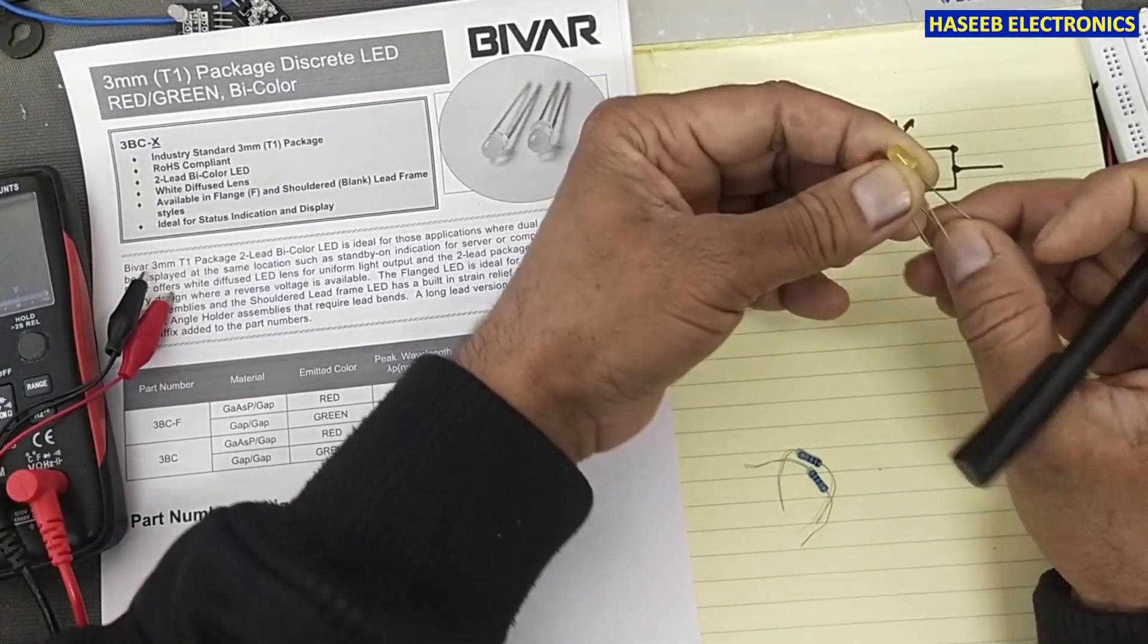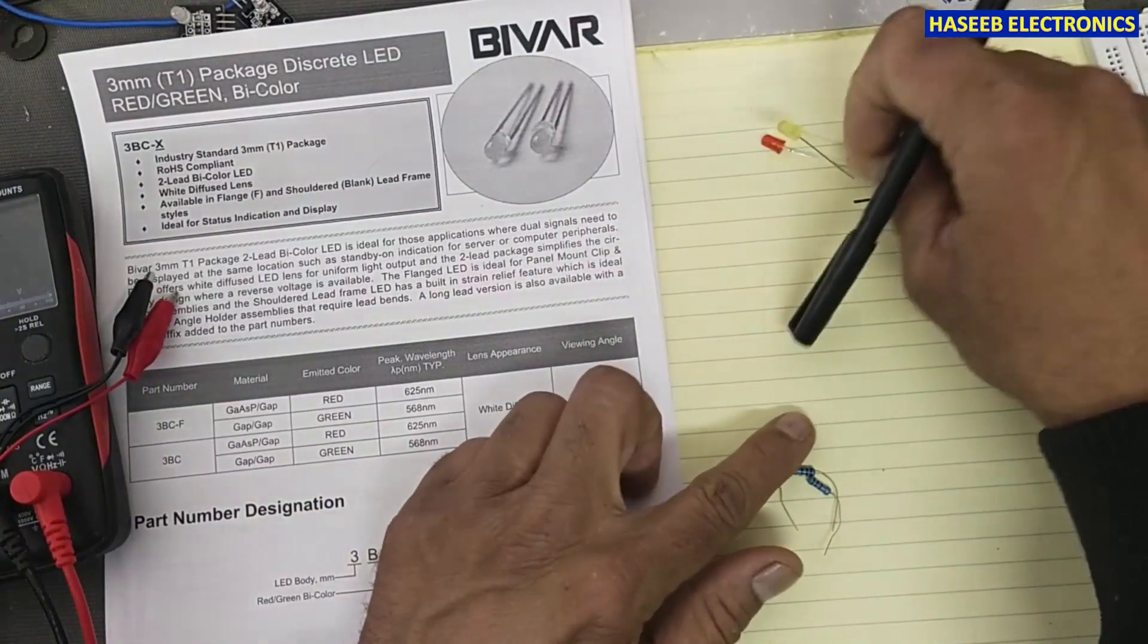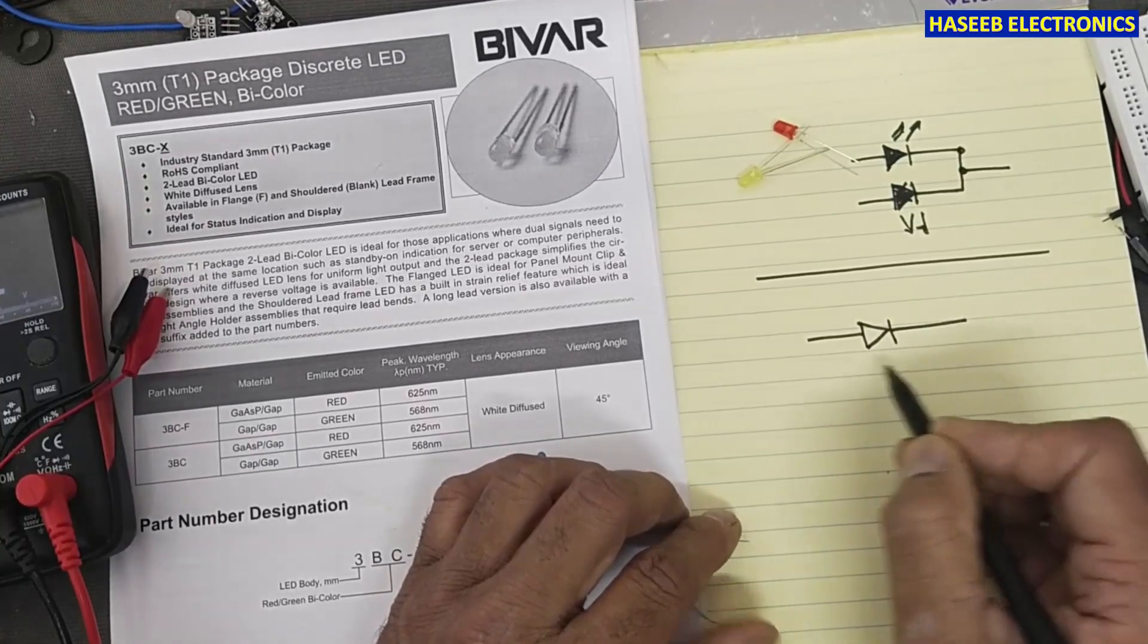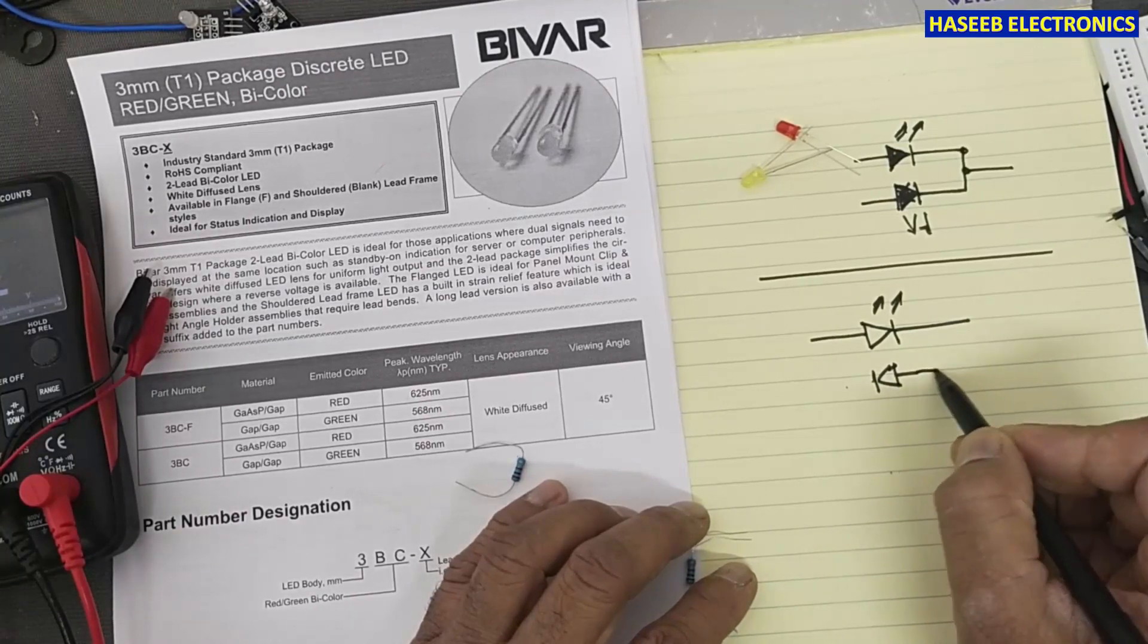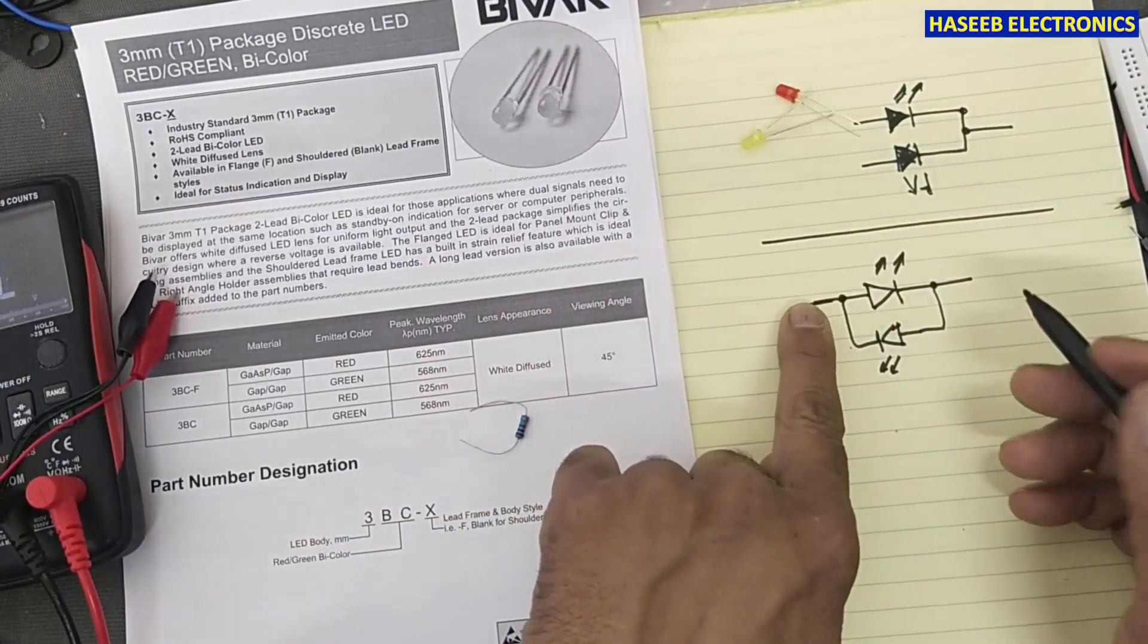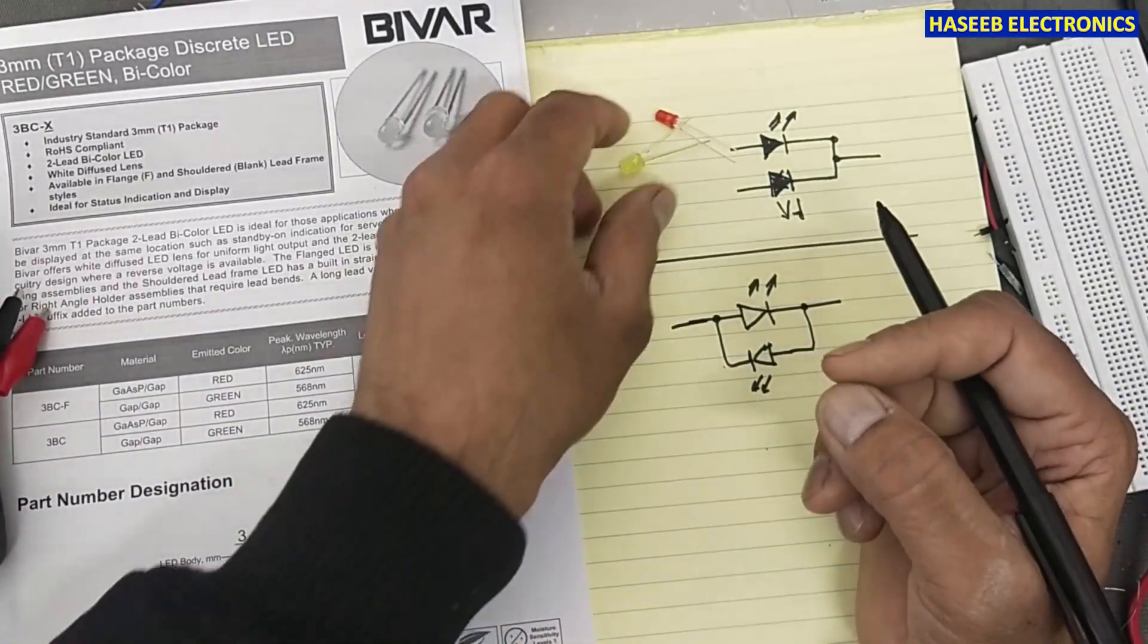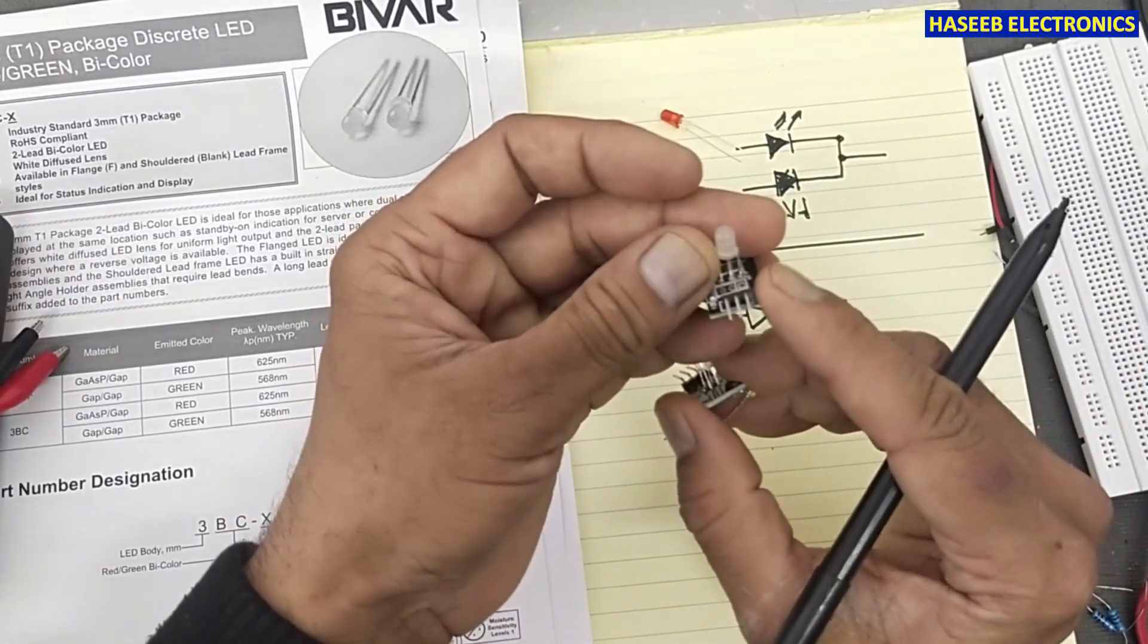But bi-color two-pin LED is in this configuration: one LED in this way, the second LED in this way. So if you test this LED in one direction, one LED will check. Reverse the leads, the second LED will be checked. These two LEDs are diffused in one package, one white color package, same like this. Normally it is used to monitor bi-directional function.